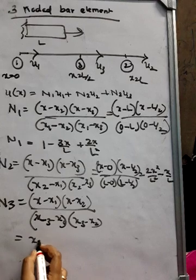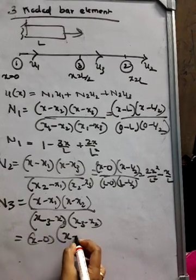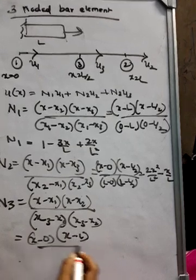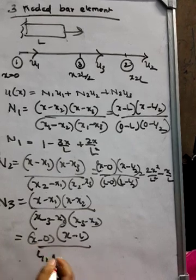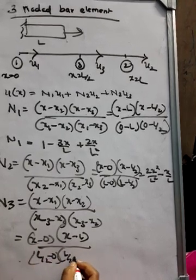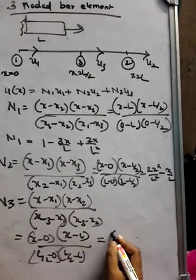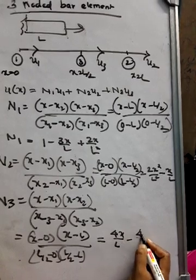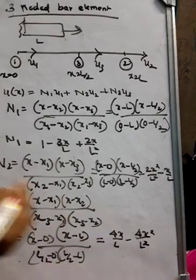This would be x - x1 is x - 0, and x - x2 value is x - l. x3 value is l/2 - 0, and l/2 - l in the denominator. So, you will be getting 4x/l - 4x²/l².